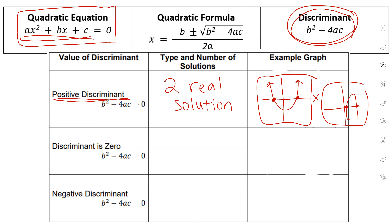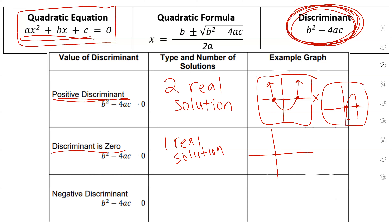If you plug numbers into the formula and you get zero — the discriminant is zero — that means you only have one real solution, meaning you only have one x-intercept. An example might look like this, where it just touches the x-axis one time. If you see a graph that looks like this, that means the discriminant must have been zero, because you only have one solution, one x-intercept.